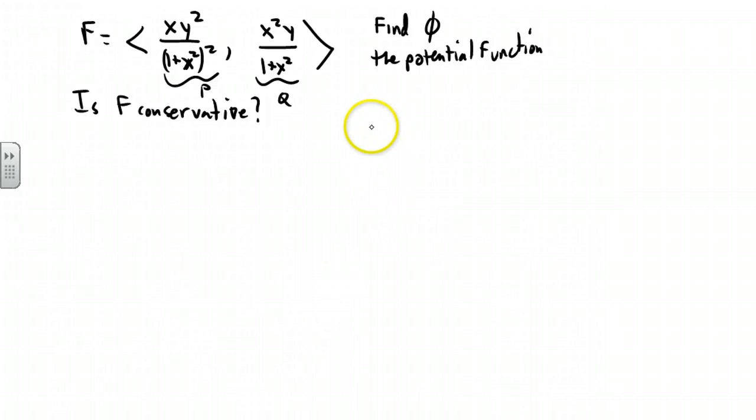We have the vector field xy squared over 1 plus x squared quantity squared in the i component, x squared y over 1 plus x squared in the j component. Is it conservative?